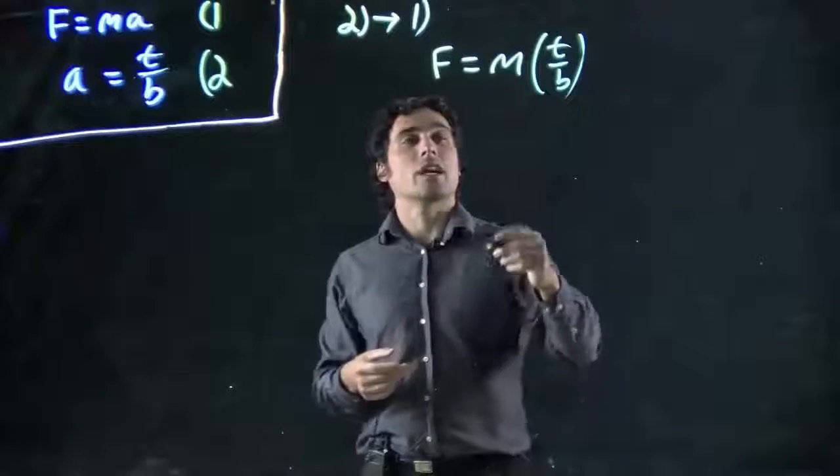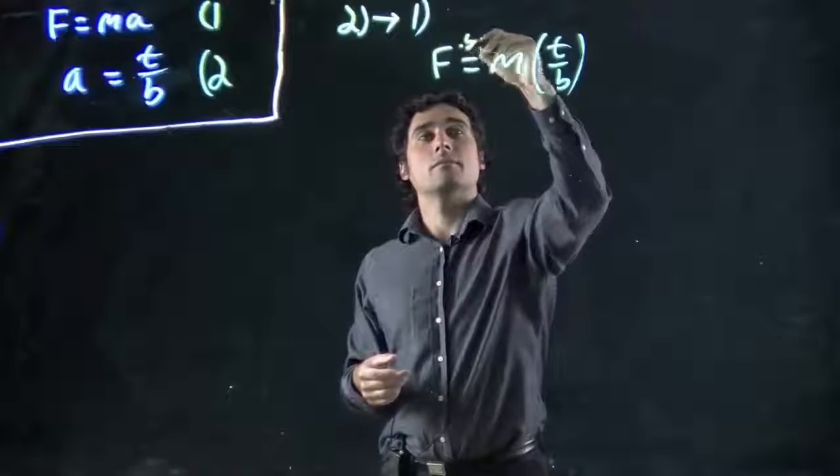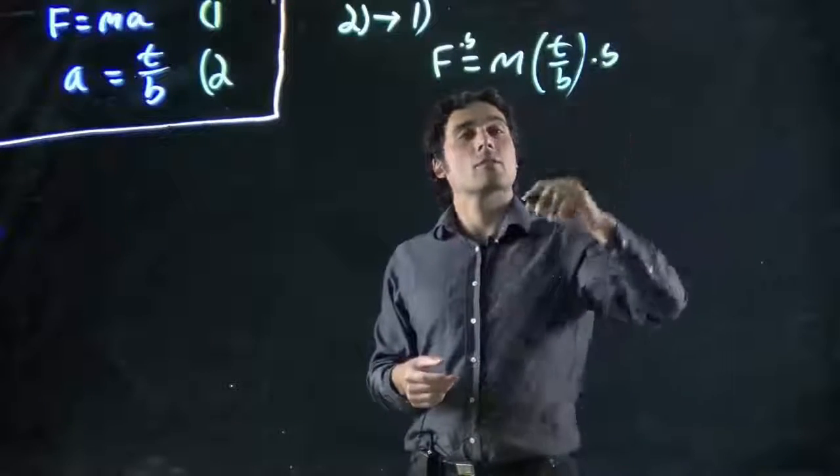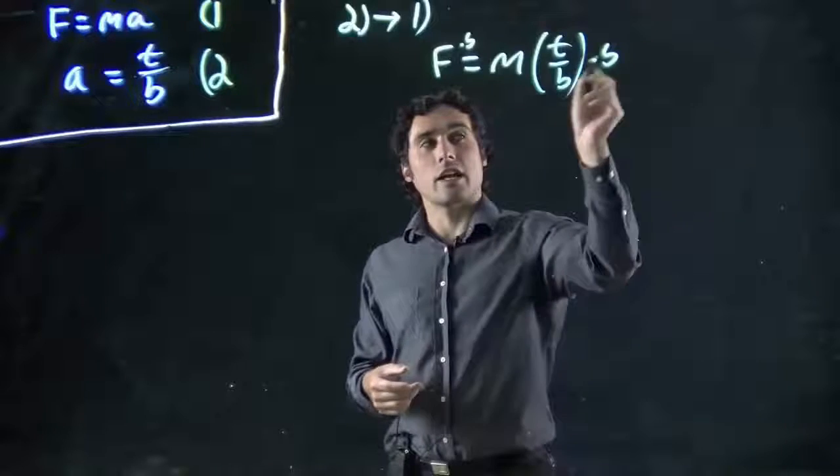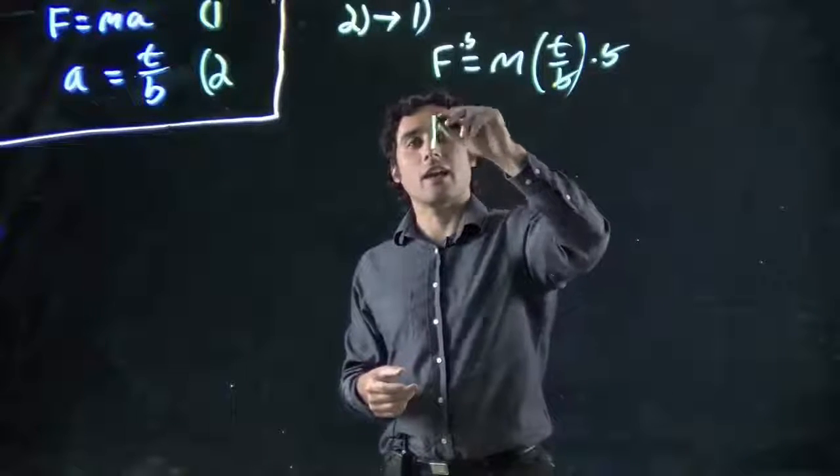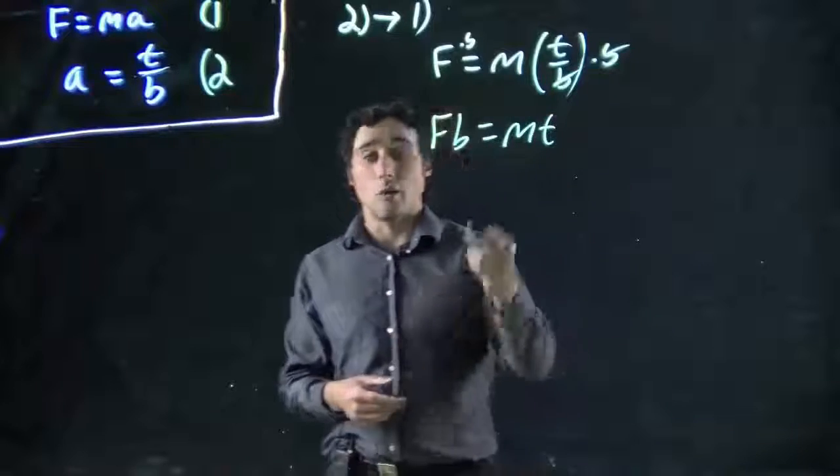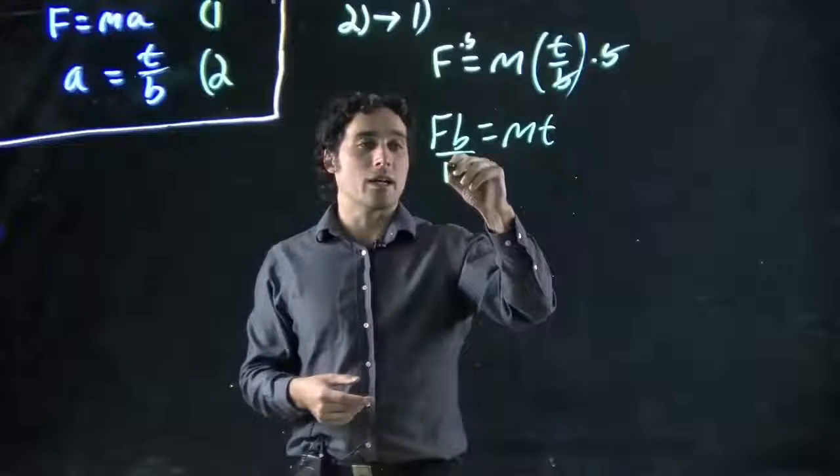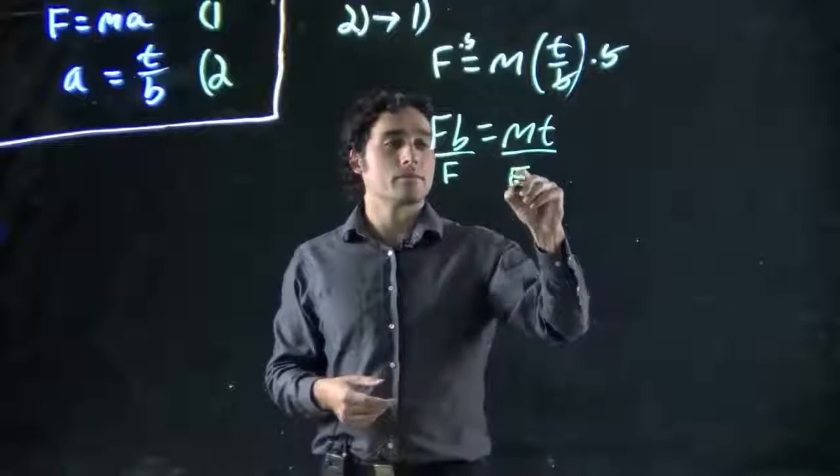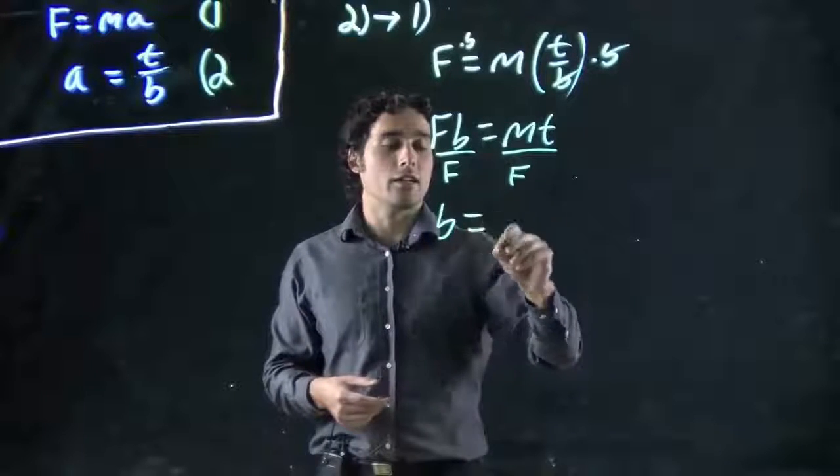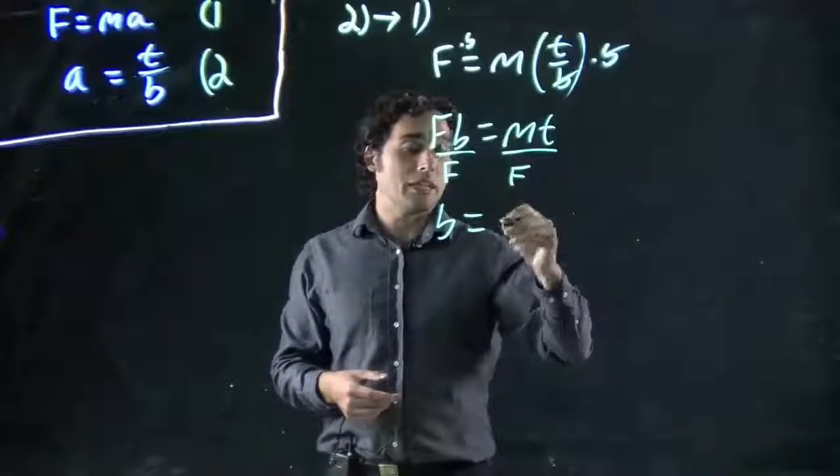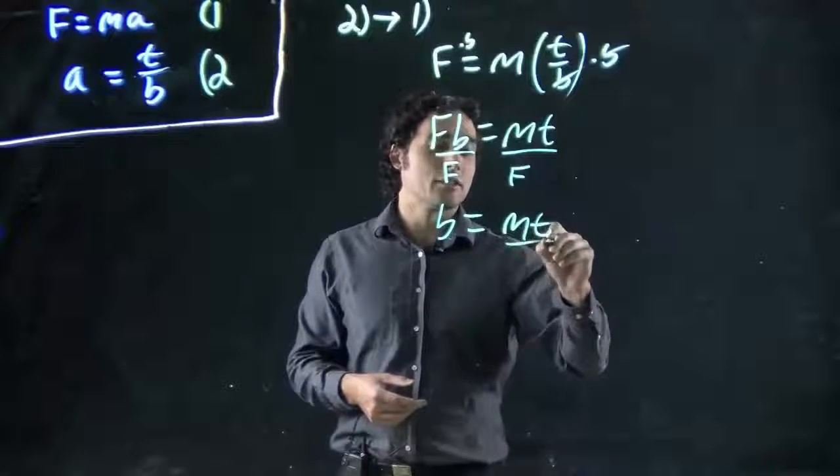In this case, I'm just going to multiply both sides by B. Multiply both sides by B. So it will cancel out on this side. And I get FB equals MT. I want just B. Got to divide both sides by F. And now I've got B equals MT over F. Great.